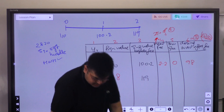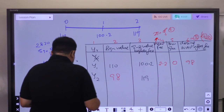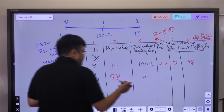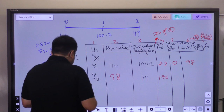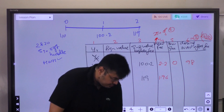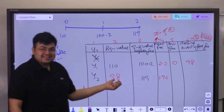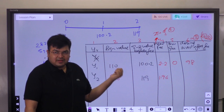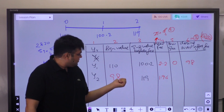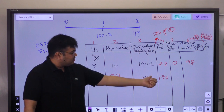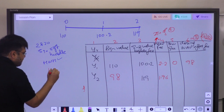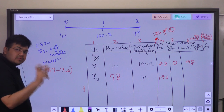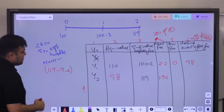For year 2, the AUM is 98. The management fee is 2% of 98, which is 1.96 million. Now, the ending value before fees is 119. You first pay the management fee whether you're making a profit or not — so 119 minus 1.96 equals 117.04. Now I need to check whether the incentive fee threshold has been crossed.